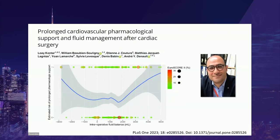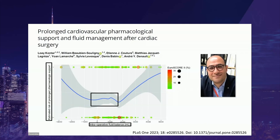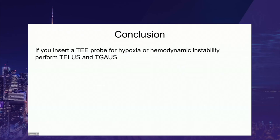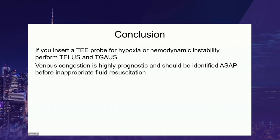This was illustrated in a study published this year in PLOS ONE by Lowy Kantar, showing that the probability of prolonged pharmacological support after cardiac surgery relates to intraoperative fluid balance. The best fluid balance is almost zero. As you get more fluid or remove too much fluid, your probability of complications increases, relatively independent of the EuroSCORE II. In conclusion, if you insert a TEE probe for hypoxia or hemodynamic instability, always consider performing TELUS or TIGUS if there's no clear cardiac answer. Venous congestion is highly prognostic in cardiac surgery and should be identified before inappropriate fluid resuscitation.